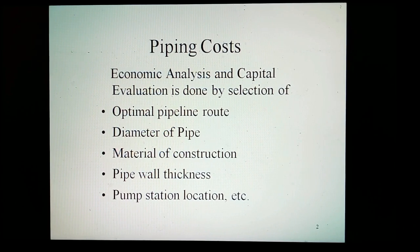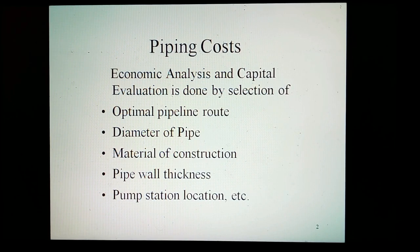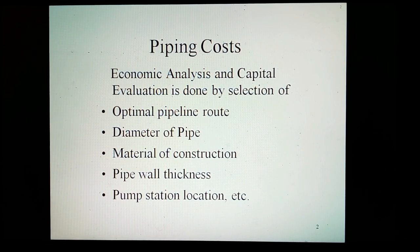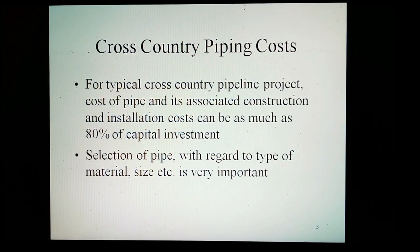The selection of the optimal pipeline diameter, material, wall thickness, and pump station location — pump units and operational equipment — is typically the result of economic analysis and investment capital evaluation of the most reasonable scenarios developed through the design phase. Even before a detailed design of a pipeline system is begun, an order-of-magnitude cost estimate will be performed to determine the feasibility of continuing to invest time and capital in the design phase. For a typical cross-country pipeline project, the cost of pipe and its associated construction and installation costs can be as much as 80% of the capital investment.